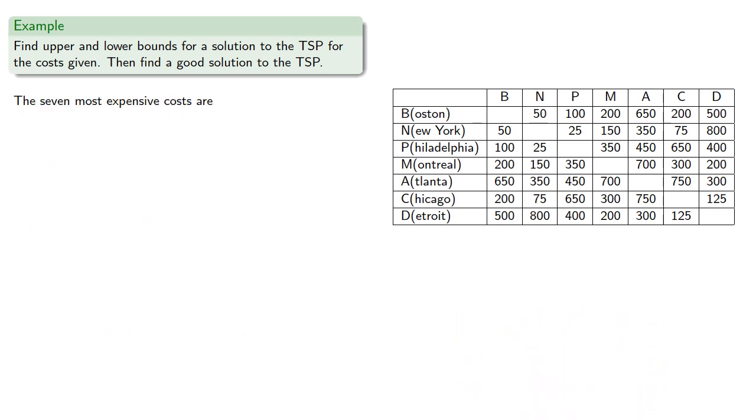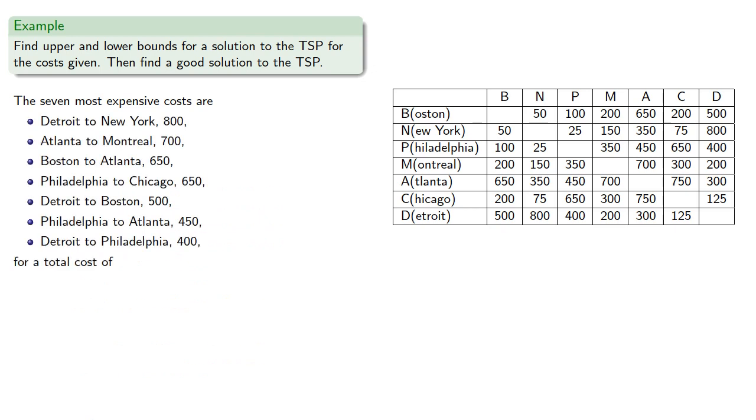On the other hand, the seven most expensive costs are for total cost of 4150, so this is an upper bound for the minimal weight Hamilton circuit.